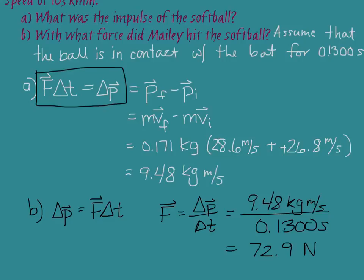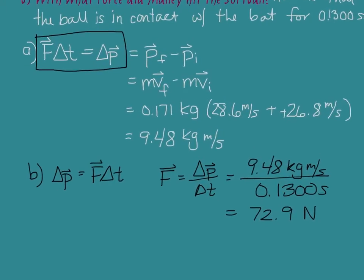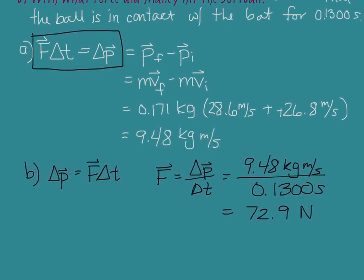It didn't say magnitude of the force — it said with what force — so that means we need a direction with this force. Because we're not given a lot of information about direction in the problem, I can simply say the force is directed toward the outfield, which makes sense since the ball is leaving the bat horizontally.